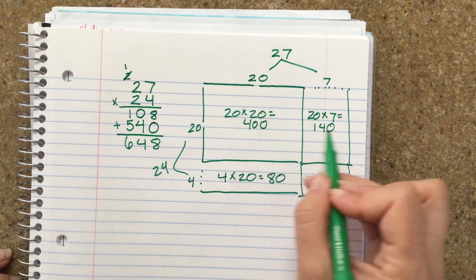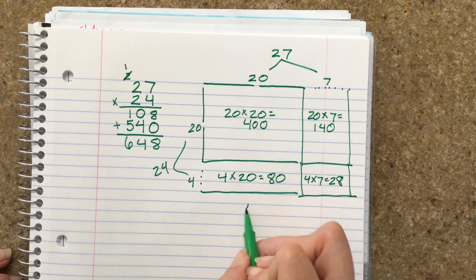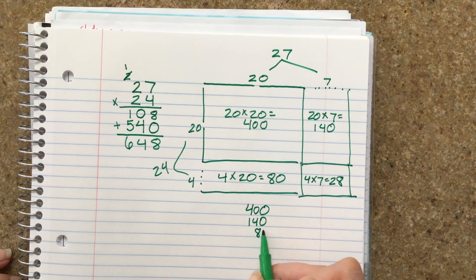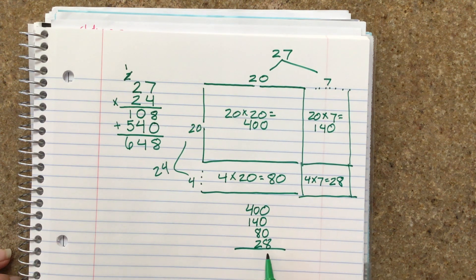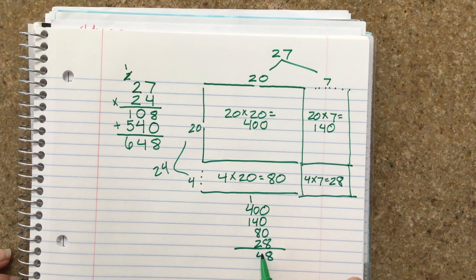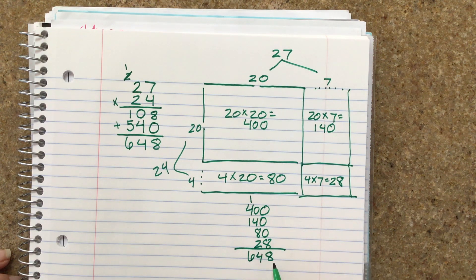And then you would add all of those together. 8, 4, 8 plus 2 is 10, plus 4 is 14. 1 plus 4 plus 1 is 6, 648.